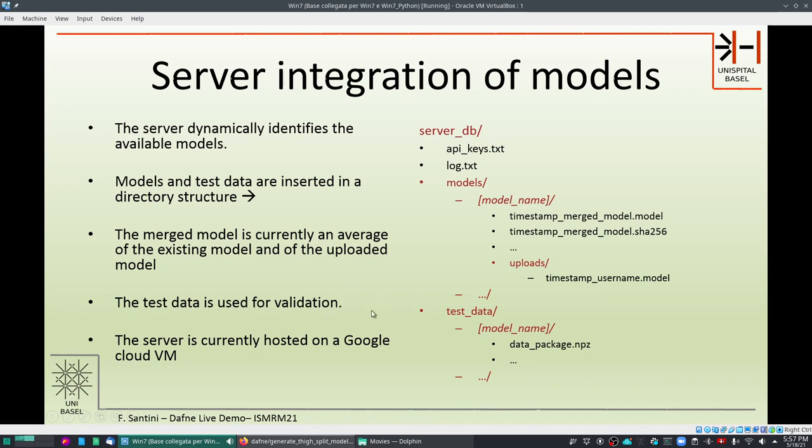And the server is currently hosted on a Google Cloud virtual machine so it's in principle available for everybody. So if you want to generate a new model you need to basically implement these functions that are then passed to the dynamic DL model object that takes care of serializing it, and then you can provide it to us together with some test data and we can just put it on the server and it will be available for all Daphne users.